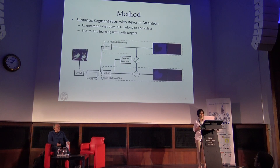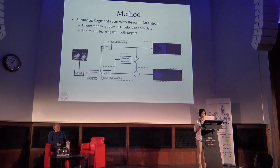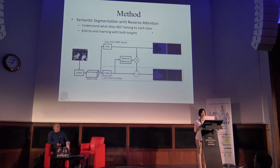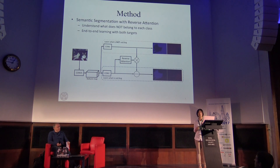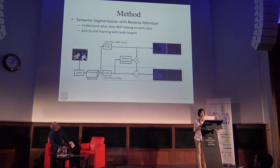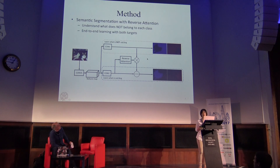Our proposed solution is to make the model learn what does not belong to a class. When proposing this reverse learning procedure, we also want to do end-to-end learning — learning what is an object and what is not an object simultaneously. So we have two branches during training.